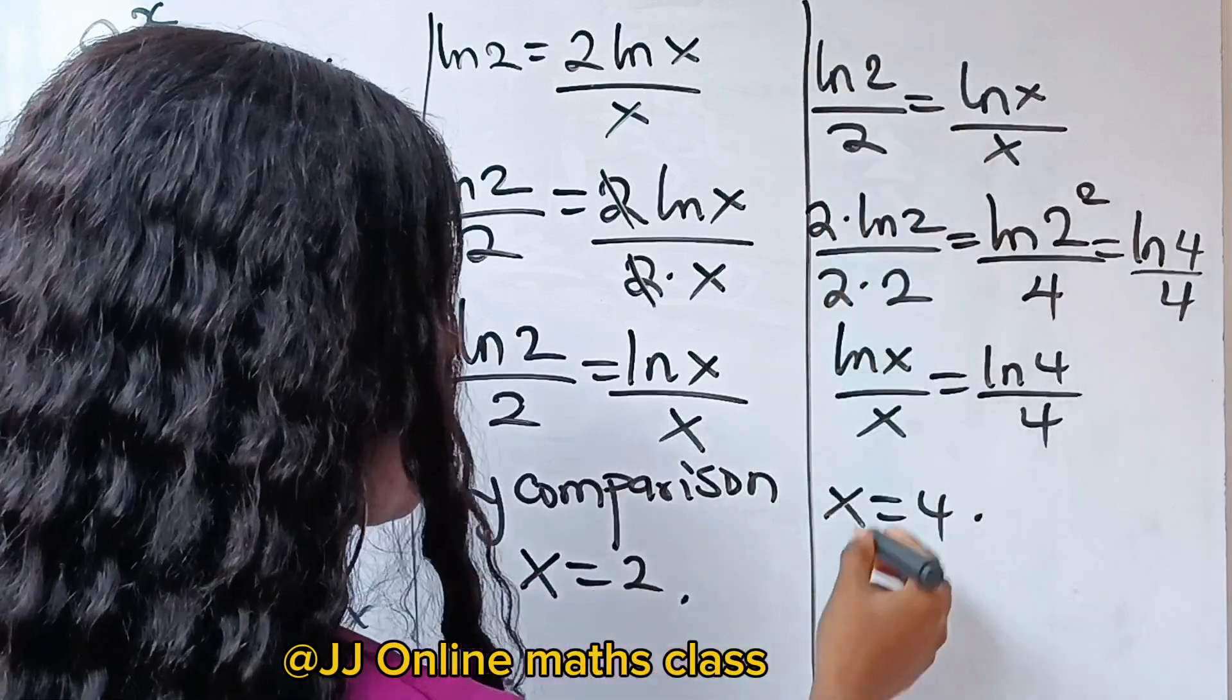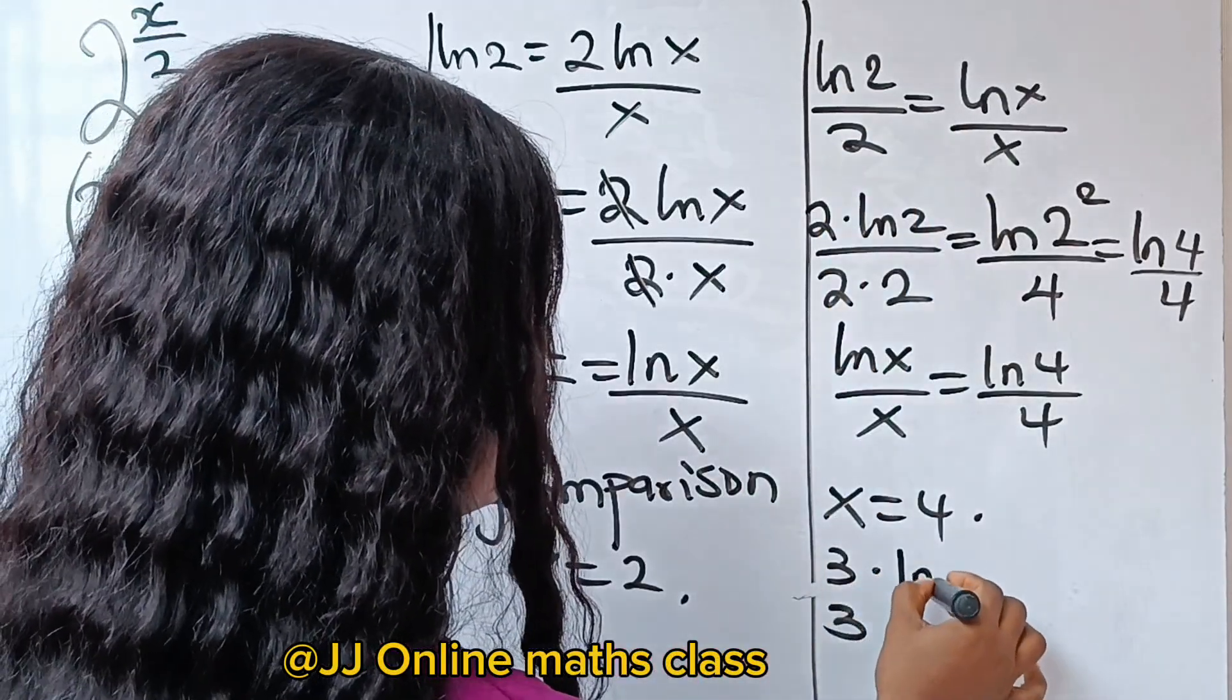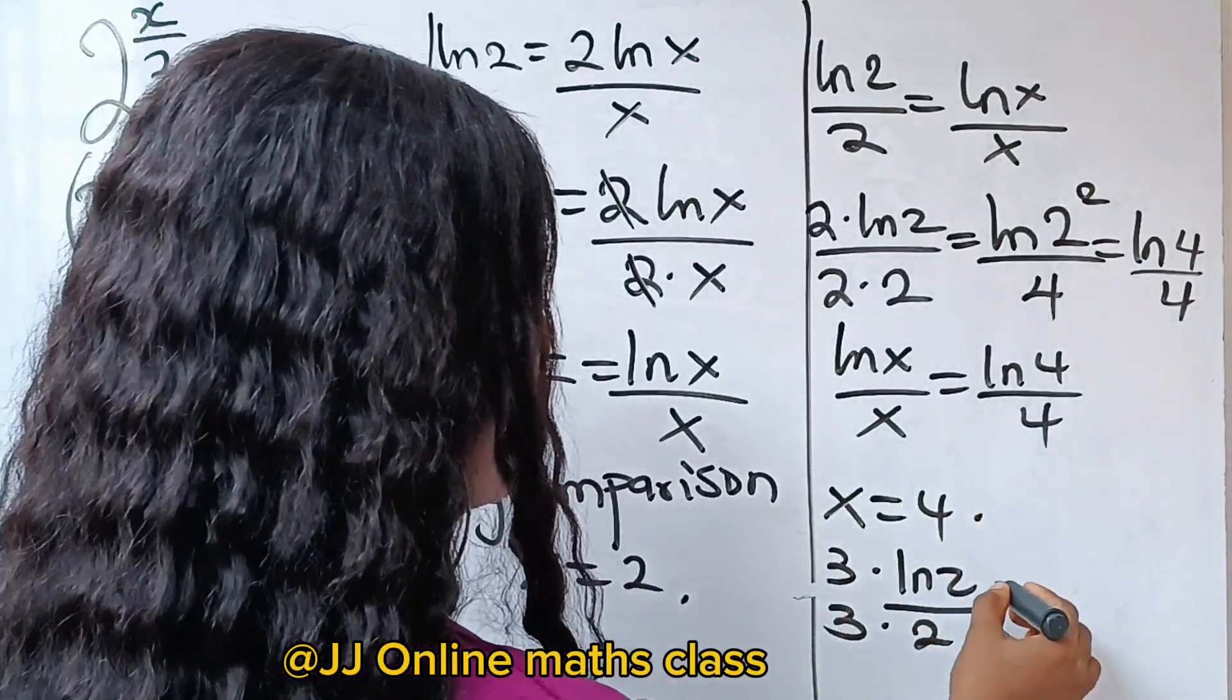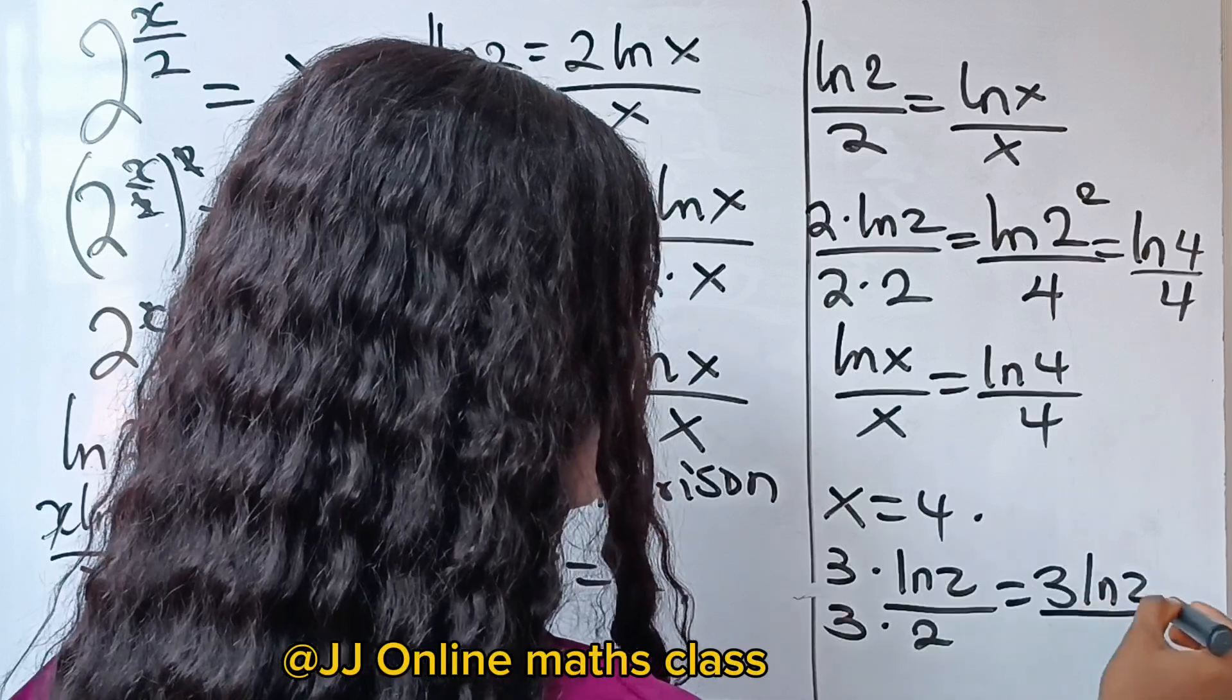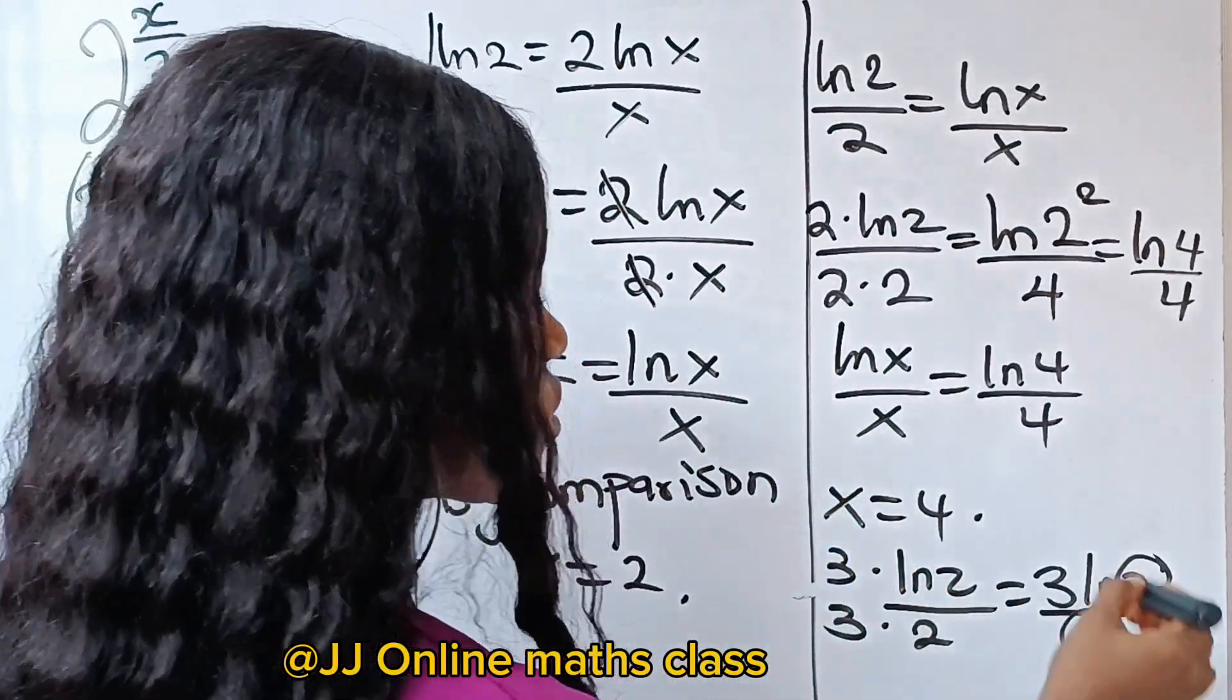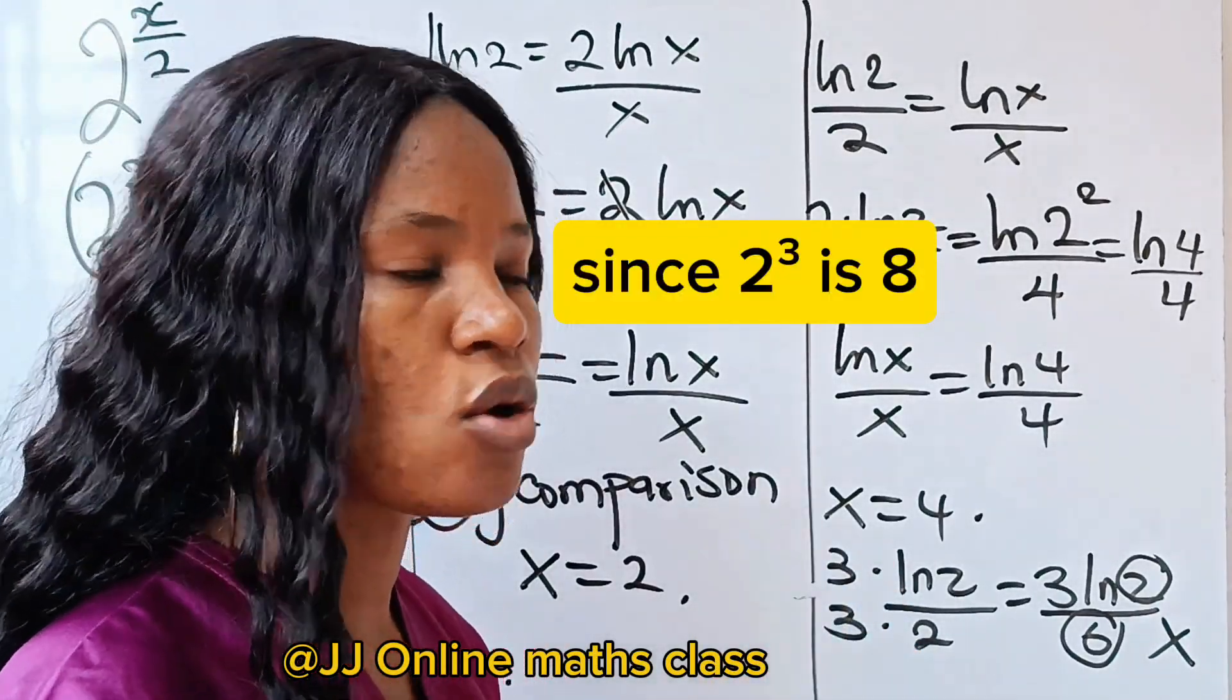Now, what if we multiply this by 3 over 3? That is 3 multiplied by ln 2 over 2. We are going to have 3 ln 2 over 6. It doesn't satisfy this equation. So that means that this is not a solution. 3 is not a value for x.